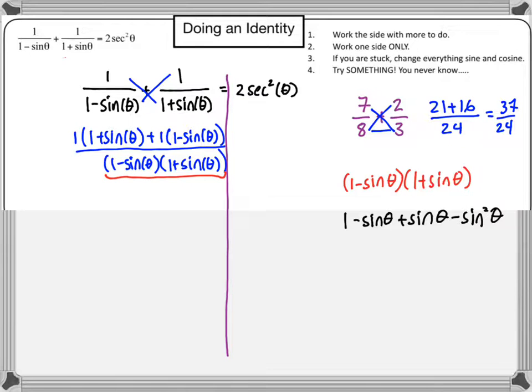And it looks like the center is going to go out, and I end up with, on the bottom, 1 minus sine squared theta. So let's go back and write that. So now I have this large division bar, 1 minus sine squared theta.